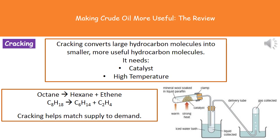Cracking converts large hydrocarbon molecules into smaller, more useful hydrocarbon molecules. In order to do this, we need two things: a catalyst and a high temperature. In the bottom right is an example setup of the equipment you should have used in class. In the test tube there is a catalyst, and you've also got a mineral soaked in paraffin. We heat that strongly with a Bunsen burner, and as a result, the large hydrocarbon molecules of paraffin are split up into smaller, more useful ones. As it comes through the tubes into the two different test tubes, we collect a liquid and a gas, which are the smaller hydrocarbons.